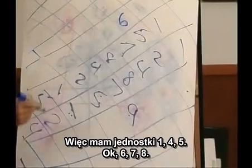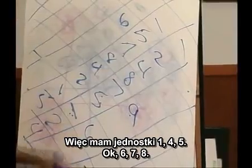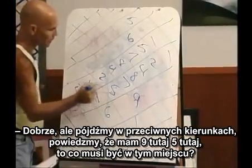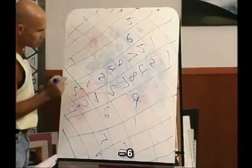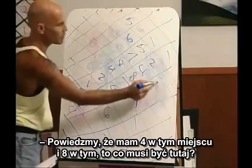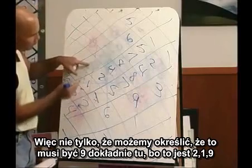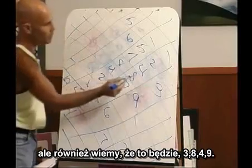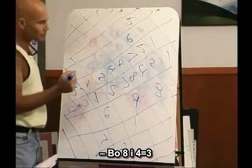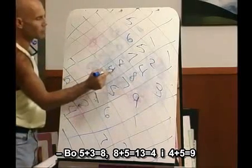And this must be a 6, and this must be a 5. So I've got units of 1, 4, 5, 6, 7, 8. Let's go the opposite direction — say I just have a 9 here, a 5 here, a 1 here. What must be over here? A 6. Or say I have a 4 here, I have an 8 here — what must be over here? 3. Exactly. Not only can we figure this must be a 9 because it's 2, 1, 9 — but we also know it would be 3, 8, 4, 9, because 8 and 4 is 3. Because 5 plus 3 is 8, 8 plus 5 is 13 is 4, and 4 plus 5 is 9.